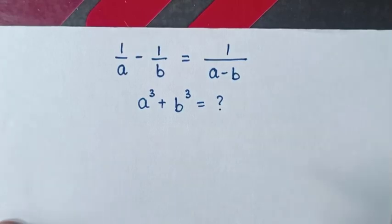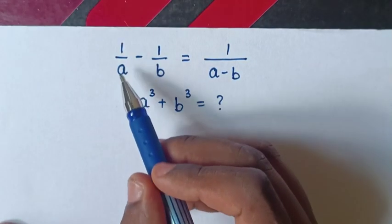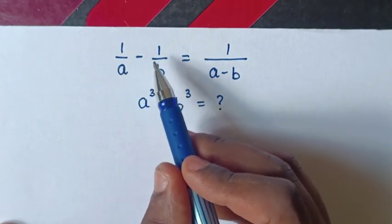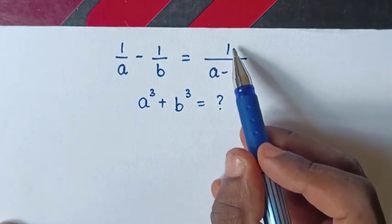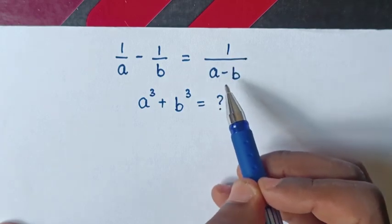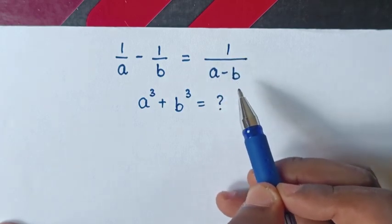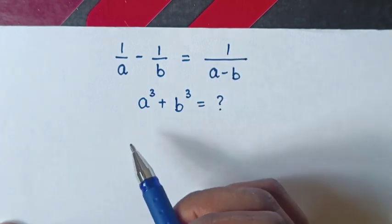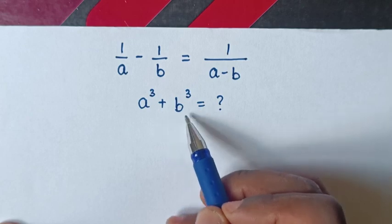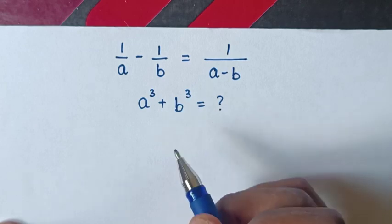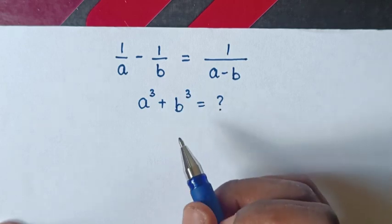Hello. How to solve 1 over a minus 1 over b equals 1 over a minus b, to find the value of a³ plus b³.